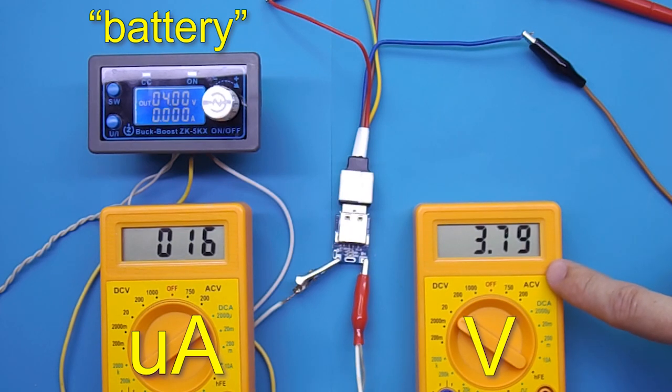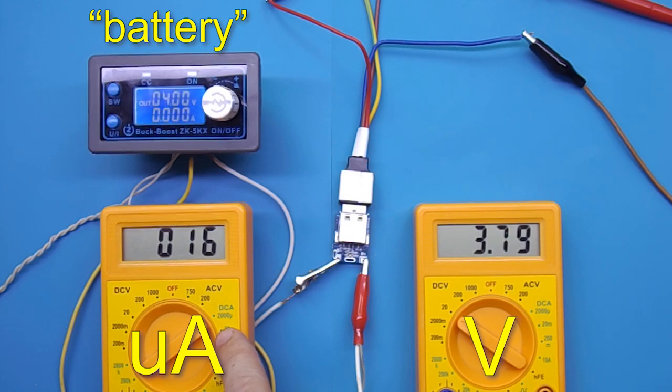The output is now 3.8 volts. It turns out that in idle mode, the converter now consumes only 16 microamps, or 0.016 milliamps.